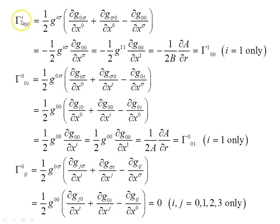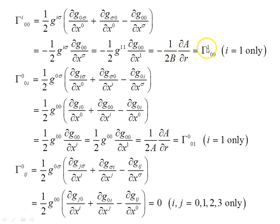Taking the top index as i and working through: for Γ^1_00, if i is 1 then σ must be 1, giving −(1/2B) × dA/dR, so γ^1_00 survives for i=1 only. For Γ^0_0i, given a diagonal metric, σ must also be 0, and since G_00 is a function of r only, the only surviving term is (1/2) × dA/dR, giving Γ^0_01 for i=1 only.